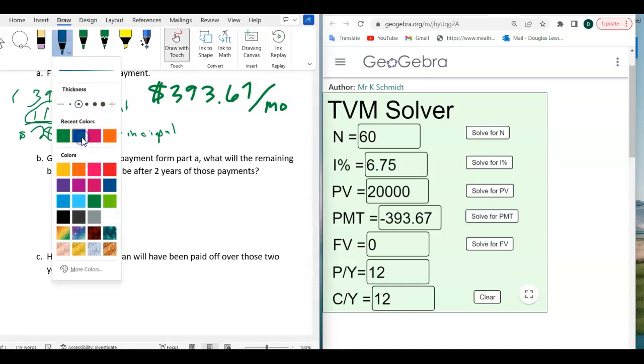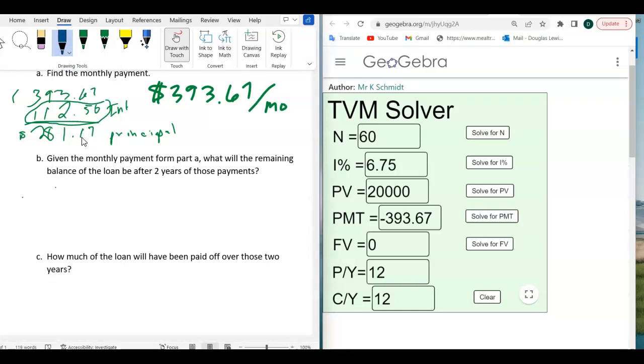And the way the TVM solver works, to use that TVM solver, we need to go ahead and take that. But the N value will no longer be 60. If you've paid off two years and a five-year loan, you have five minus two years, you have three years remaining. And this, on the TVM solver, the three years remaining, that's what goes into N.